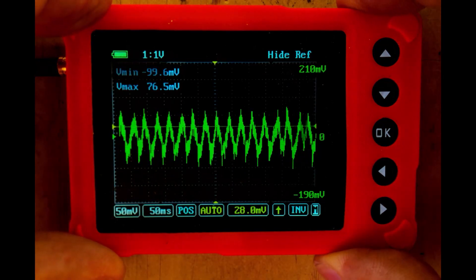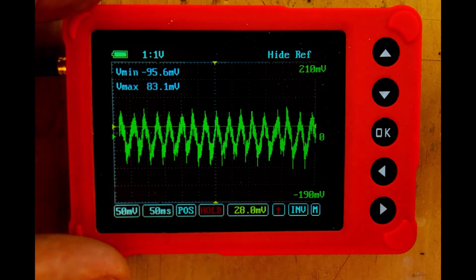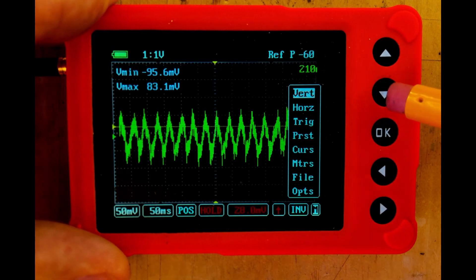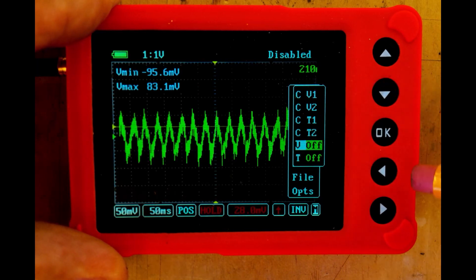If we press and hold the button, that will freeze it on the screen right here at hold. And now if we want to do our own measurements, we can come over to here. We can turn on our cursors. We can come down here and go to our vertical cursors, and we can turn that on.